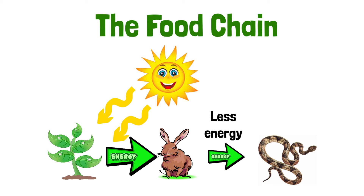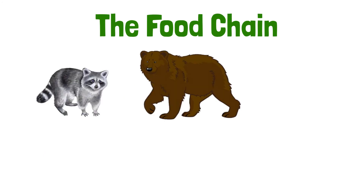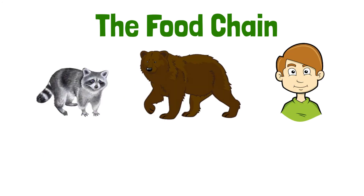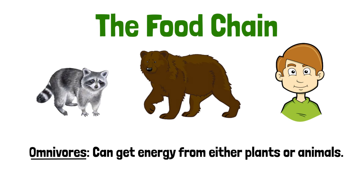As you can see, with each step in a food chain, there is less and less energy available. Some organisms, like raccoons, bears, and humans, can get energy from either plants or animals. This type of organism is called an omnivore.